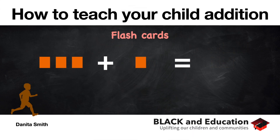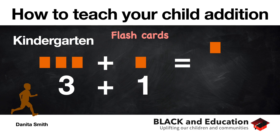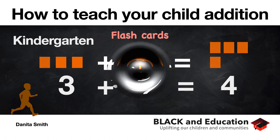I have three blocks right here on the left — you can probably guess this on your own. Three plus one block — that's going to give me one, two, three blocks plus one more, which is four. So three plus one is equal to four.